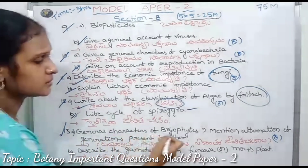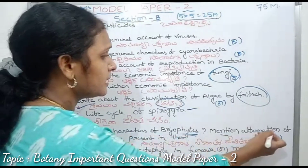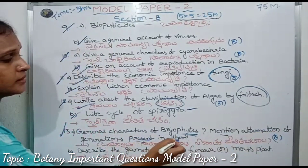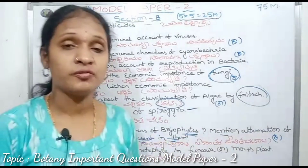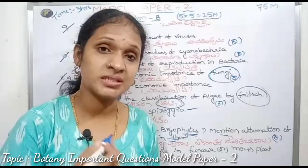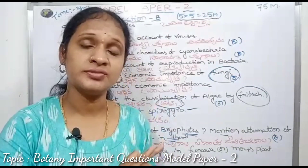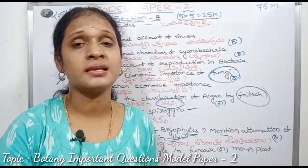General characters of bryophytes — mention the alternation of generations present in them. Cover bryophytes general characters, alternation of generations, and then life cycles.